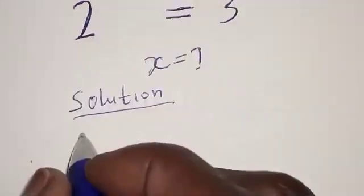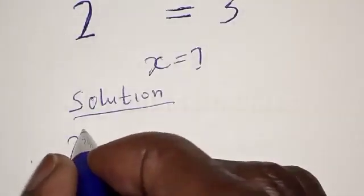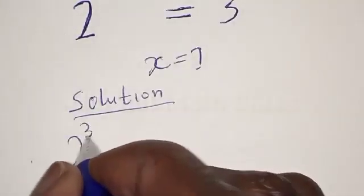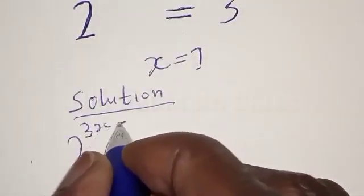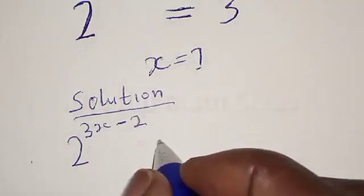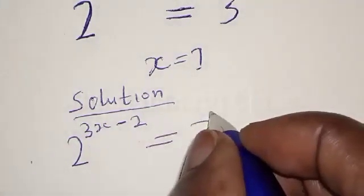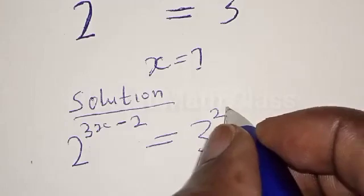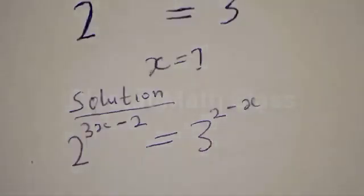We have 2 raised to power 3x minus 2 is equal to 3 raised to power 2 minus x.